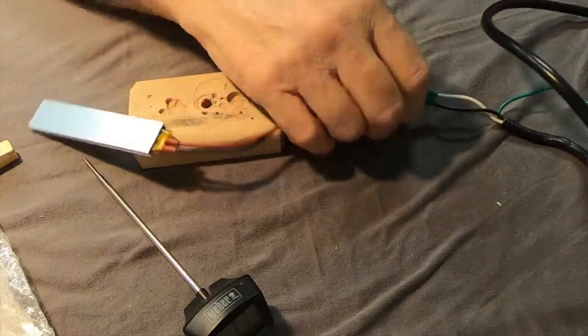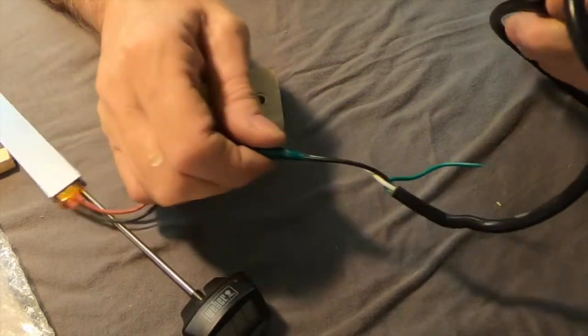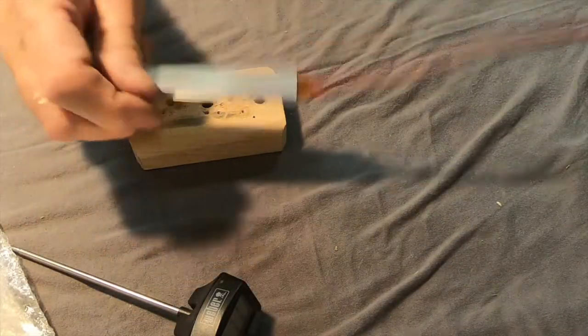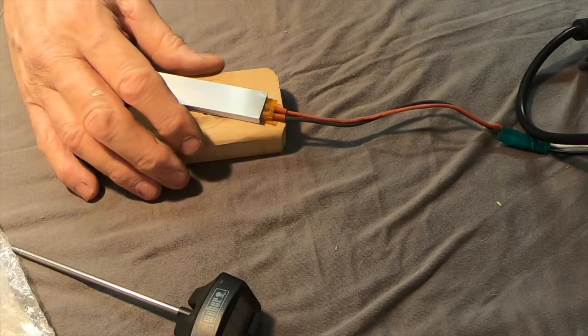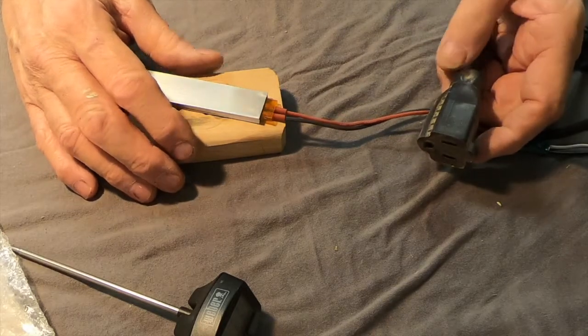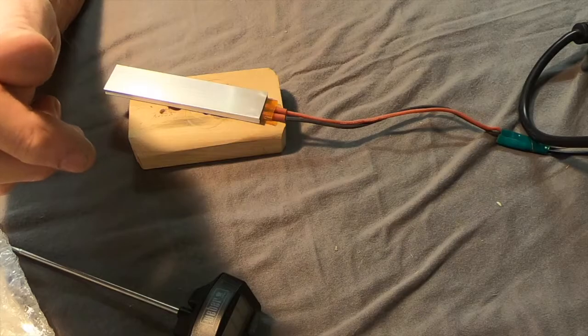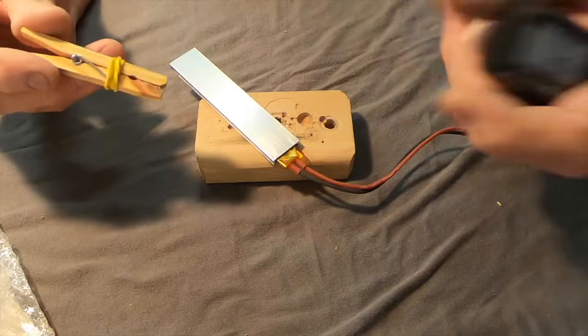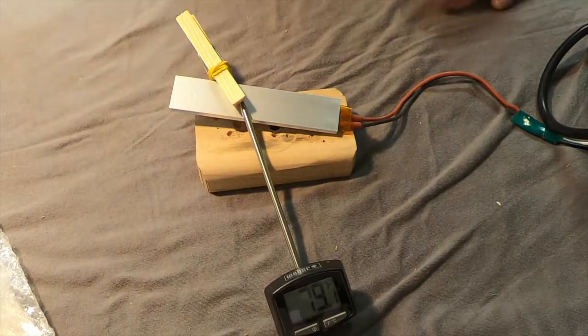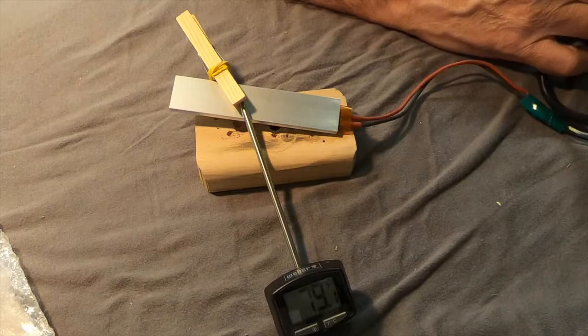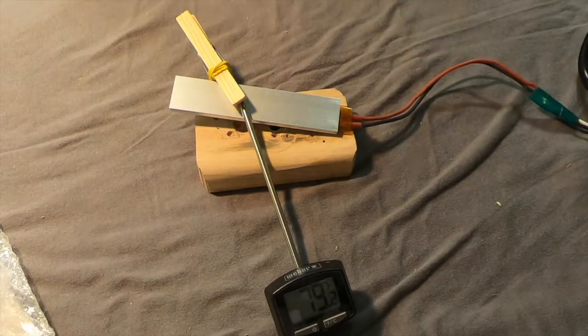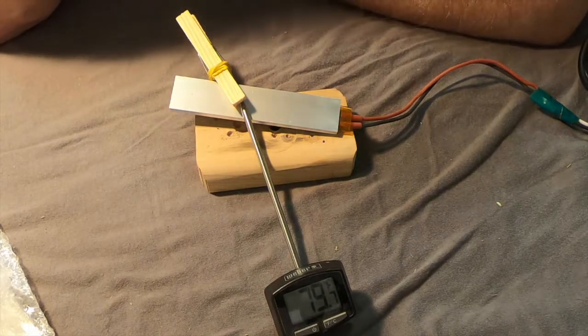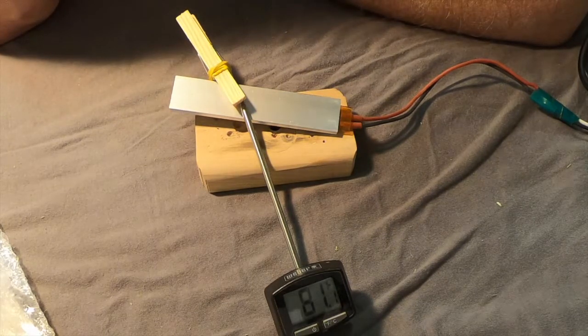I went ahead and I soldered this extension cord or appliance cord onto the end of the heating element, and I have an extension cord here to plug it into somewhere. There it is. And I'm going to just use a clothespin here. I think we're set up. Let's plug this thing in. There we go. And we're off to the races.